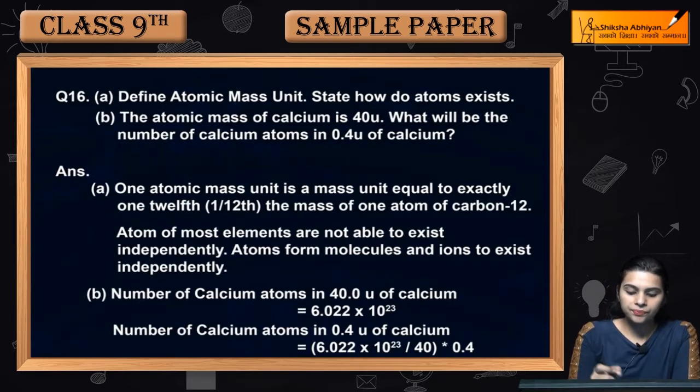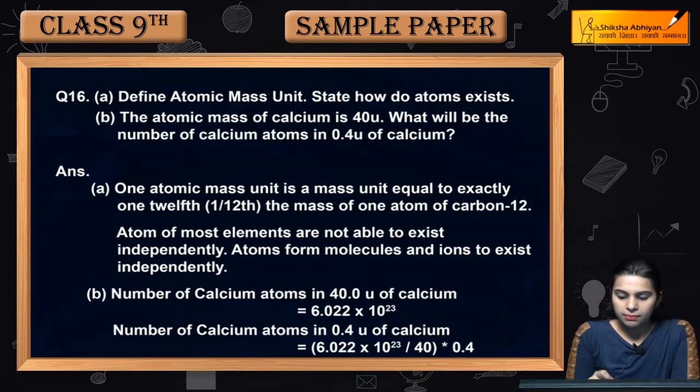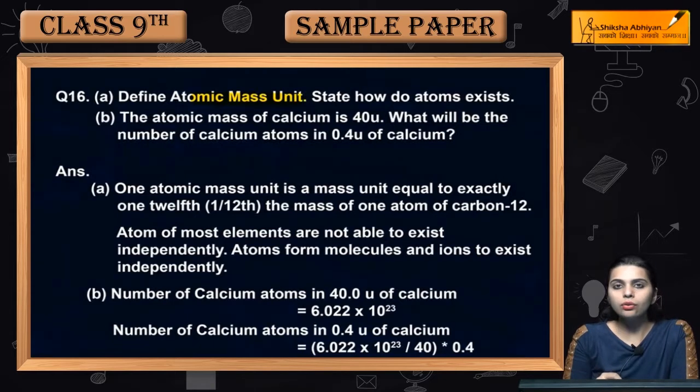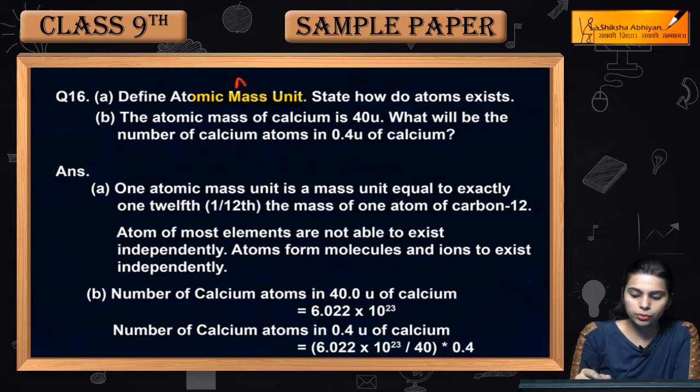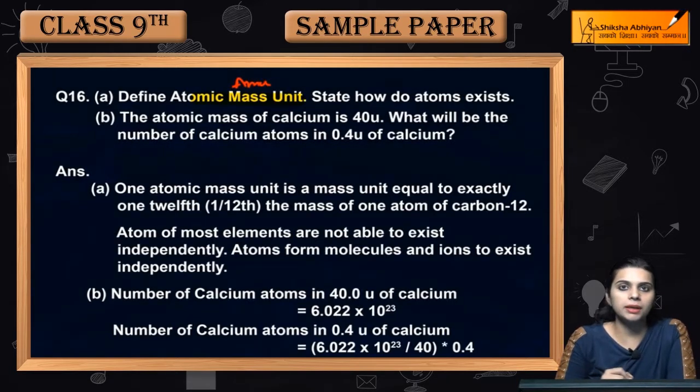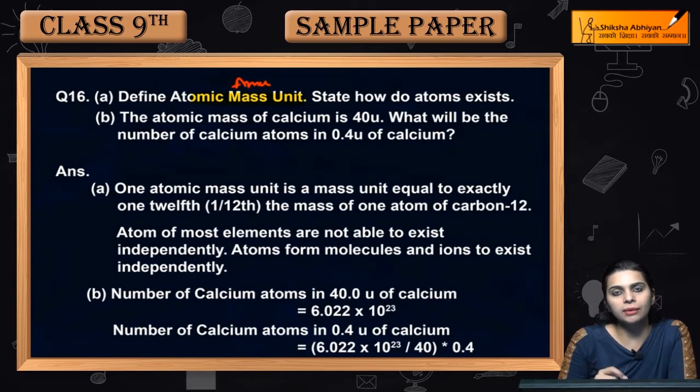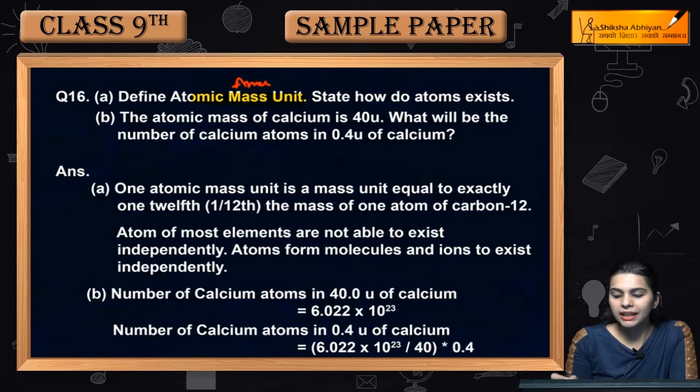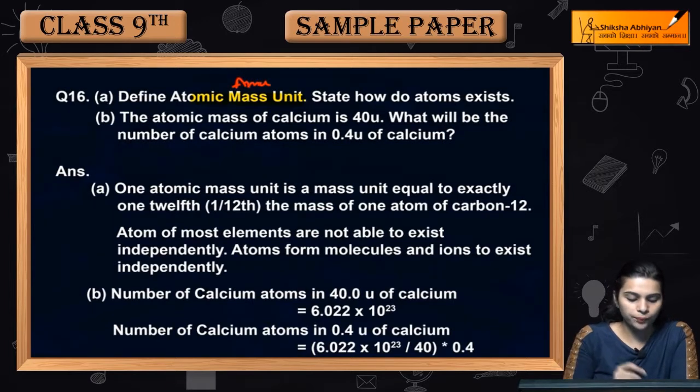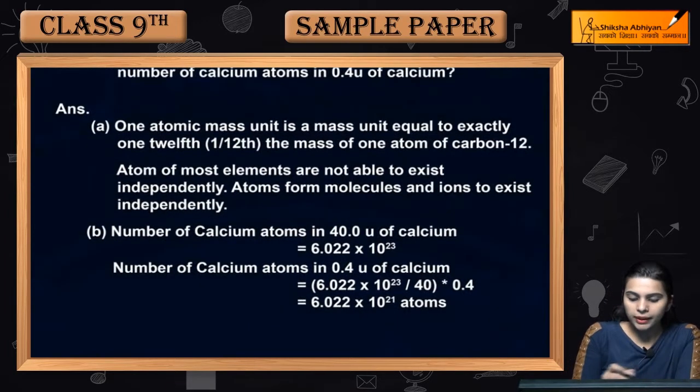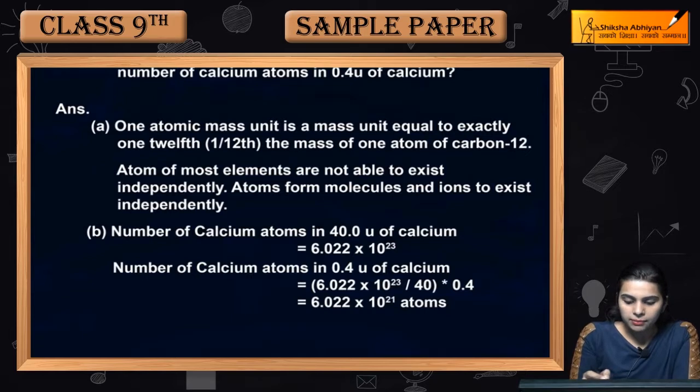Define atomic mass unit. State how do atoms exist. You need to know what is atomic mass unit. In short form we also call AMU. When we call any atom of mass, so this is atomic mass unit. And how do atoms exist?